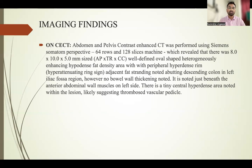CT of the abdomen and pelvis was done using the Siemens Somatom Perspective 64-row, 120-slice machine. It revealed an 8 x 10 x 5 mm well-defined, oval-shaped, heterogeneously enhancing hypodense fat density area with a peripheral hyperdense rim — also called the hyperattenuating ring sign — with adjacent fat stranding, abutting the descending colon in the left iliac fossa region. No adjacent bowel wall thickening was noted, and there was a tiny central hyperdense area suggesting a thrombosed vascular pedicle.